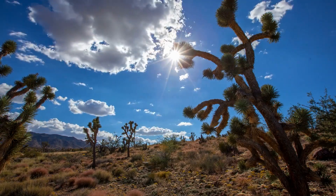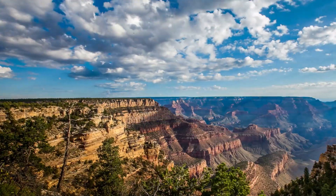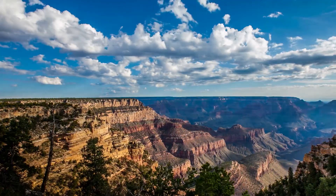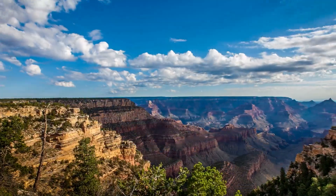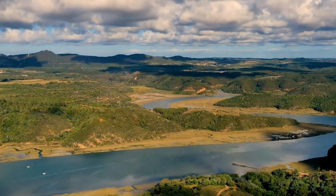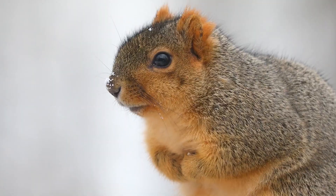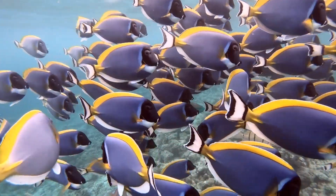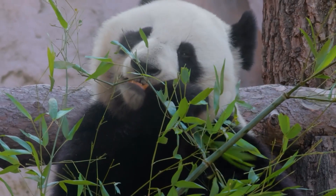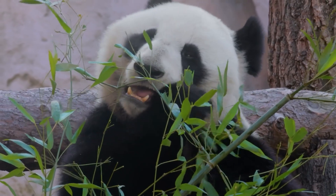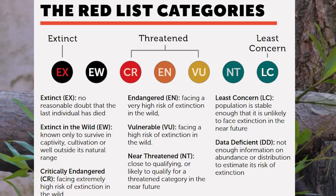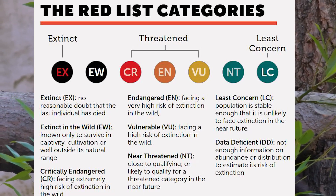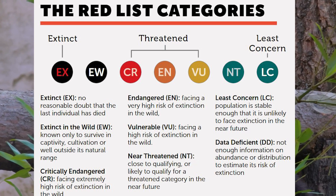Extinction happens when environmental factors or evolutionary problems cause a species to die out. The disappearance of species from Earth is ongoing and rates have varied over time. A quarter of mammals are at risk of extinction, according to the International Union of Conservation of Nature Red List estimates.